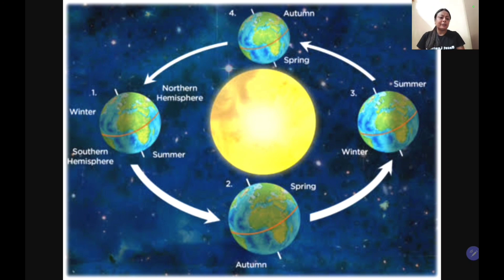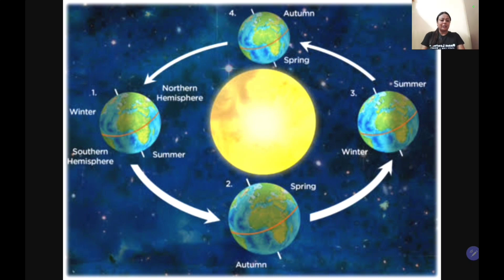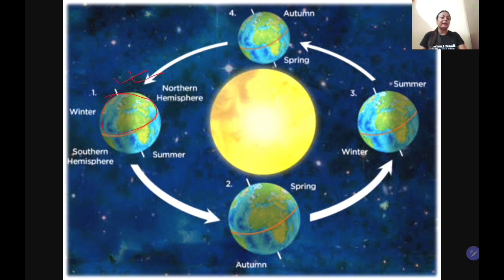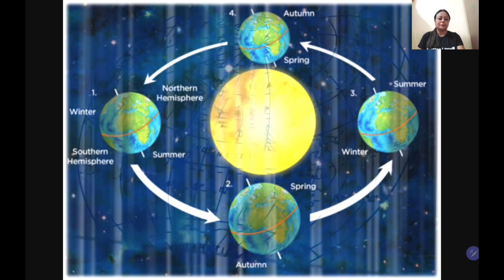Let's see where the earth's position will be in relation to the sun. Here is the northern hemisphere — you can see it is away from the sun. This is the time when we experience winter.